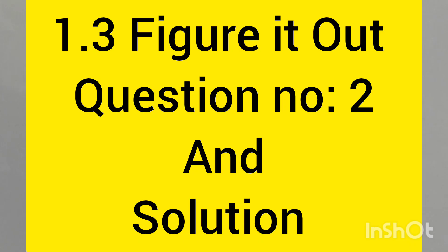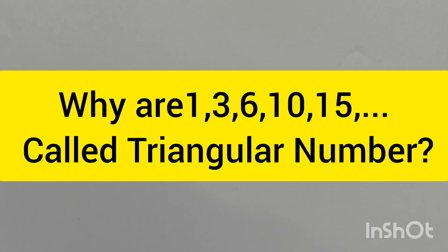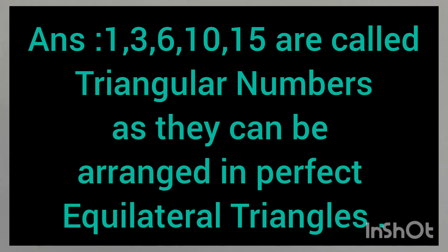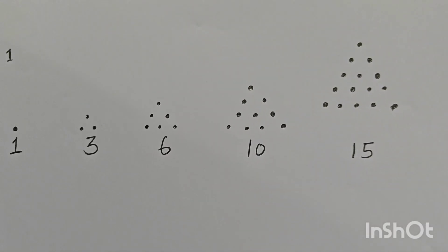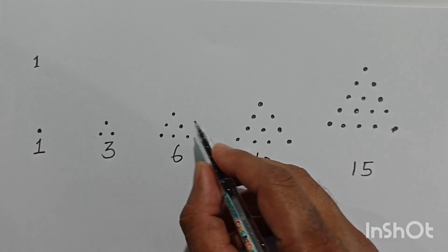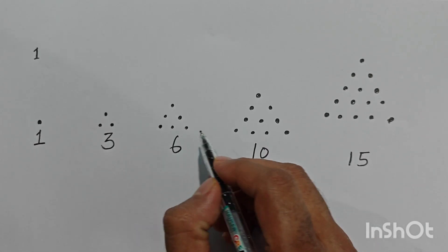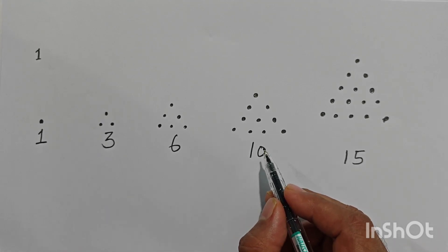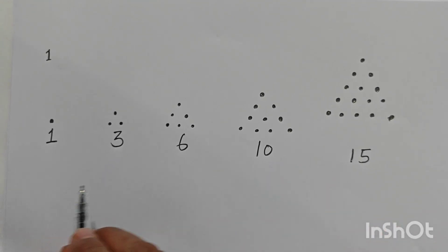Now we discuss question number 2, part one: why are 1, 3, 6, 10, 15 and so on called triangular numbers? Answer: they are called triangular numbers because they can be arranged in perfect equilateral triangles. Each side has an equal number of dots, forming an equilateral triangle where all sides are equal.